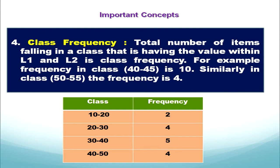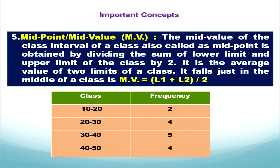The next concept is midpoint, often known as midvalue. The midvalue of a class is also called its midpoint. To get this midpoint, we first add up the lower limit and the upper limit, then divide this sum by 2 since we have 2 limits, and we will get the midvalue.